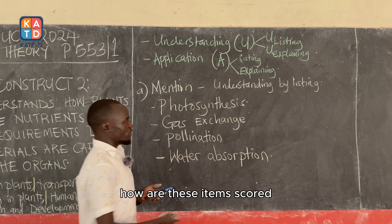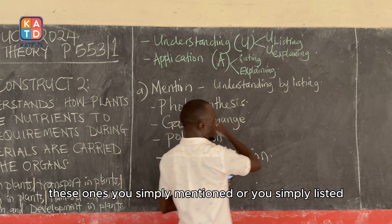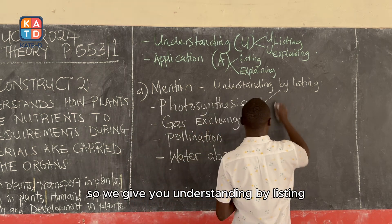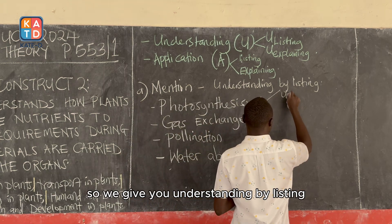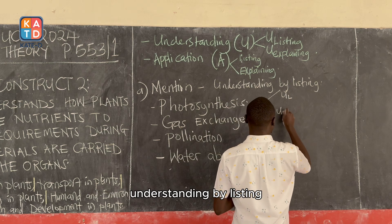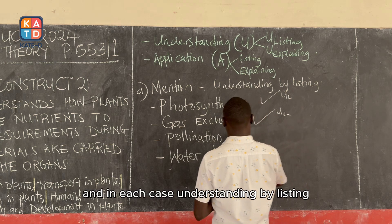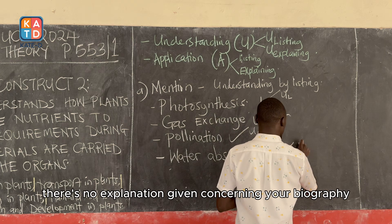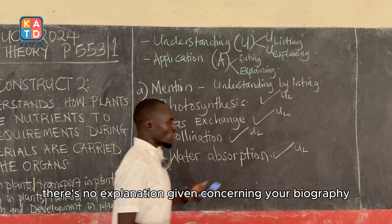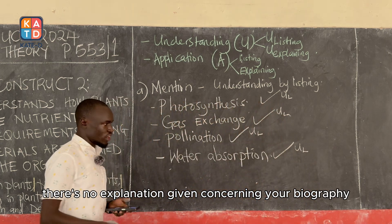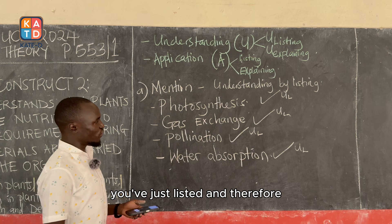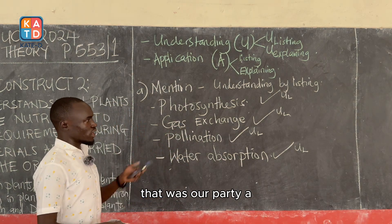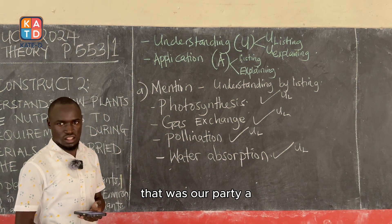How are these items scored? You simply mentioned or listed them, so we give you understanding by listing. In this case, there is no explanation given concerning your biology — you've just listed. Therefore, we score it as understanding by listing. That was our Part A.